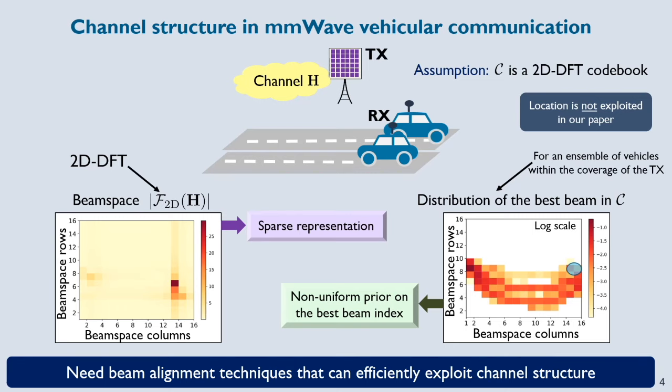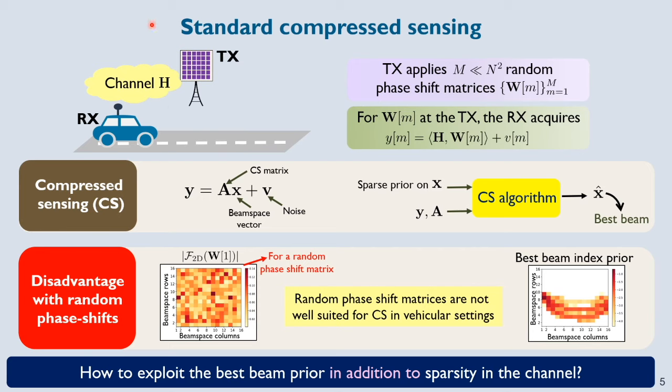But how can we exploit this structure in addition to sparsity? That's a big question. Now, there's been a lot of prior work on exploiting the sparse structure of beamspace using compressed sensing. I'll now discuss compressed sensing and show you that standard compressed sensing based solutions may not be well suited to vehicular communication scenarios.